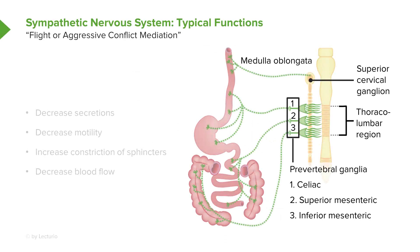The sympathetic nervous system is their fight-or-flight response. Here, you're trying to decrease secretions, decrease motility, increase constriction of sphincter, and decrease blood flow.